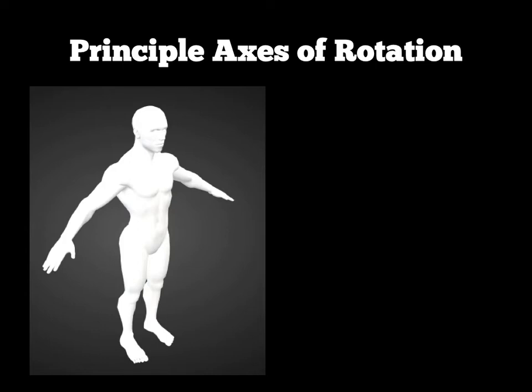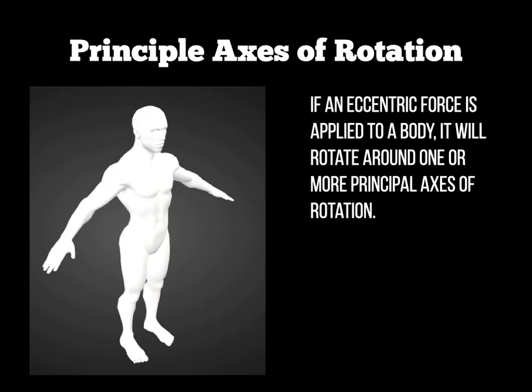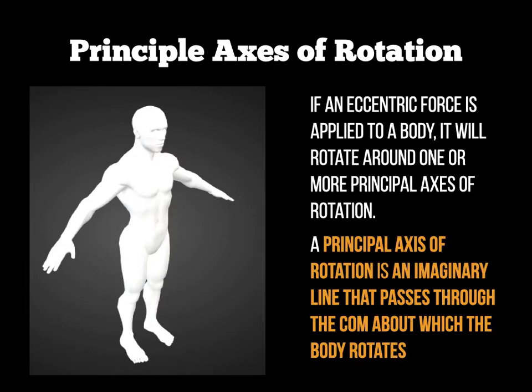To start angular motion you also need to think about the principal axes of rotation. If you push a body or object around a certain axis it will rotate differently, depending on where you place that force. A principal axis of rotation is an imaginary line that passes through the centre of mass around which we can move the body. We have three principal axes of rotation.